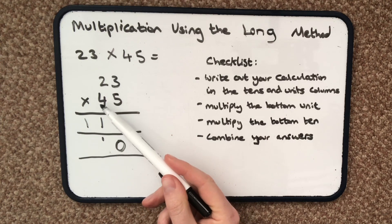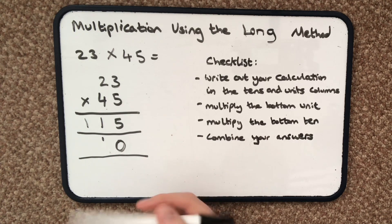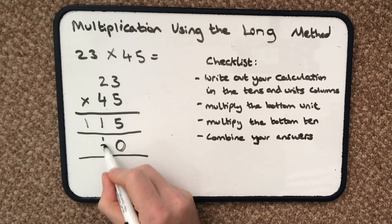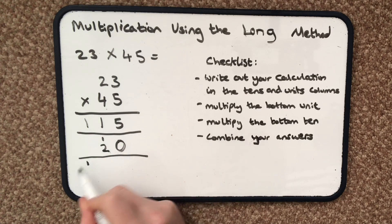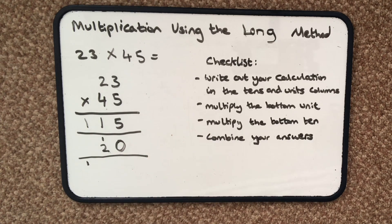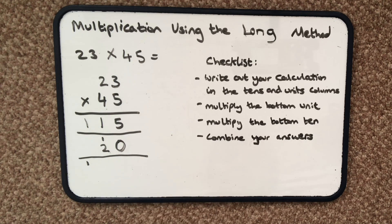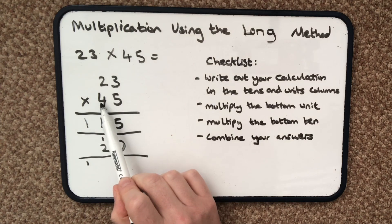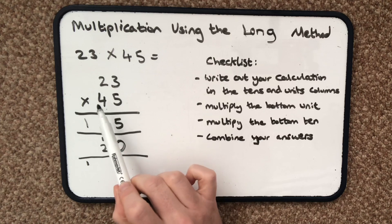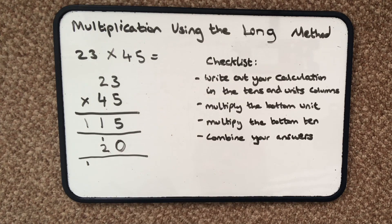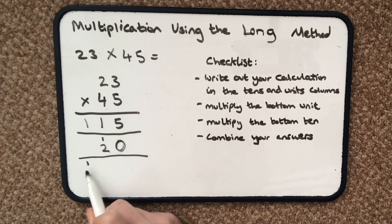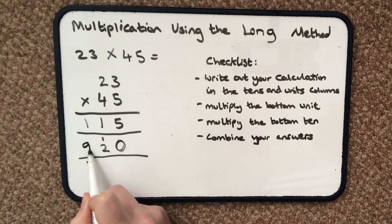So then I do 4 tens by 3. So 4 times 3 is 12 and I carry that over into the next column, into the hundreds column, because I've got 2 there and then the 100 from the 12. And then 4 tens by 2 tens, or just 4 times 2 equals 8, plus this extra 1 is 9.